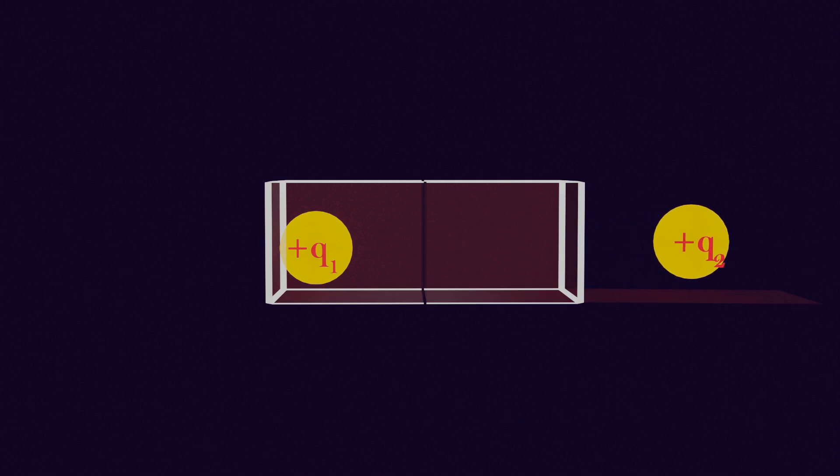Now let's imagine that we have somehow bound these two charges so that they cannot move. So the work we did has now been converted into potential energy. If we release q2, this potential energy will be converted into kinetic energy and the charge will start moving.